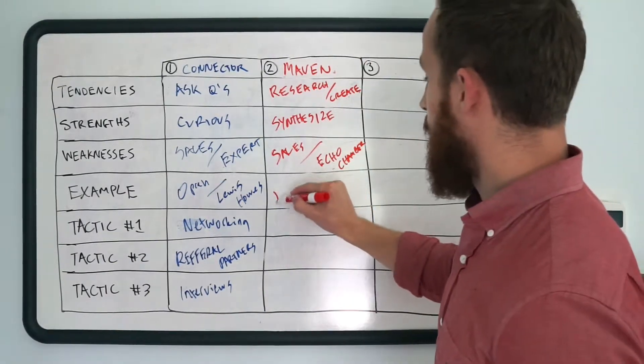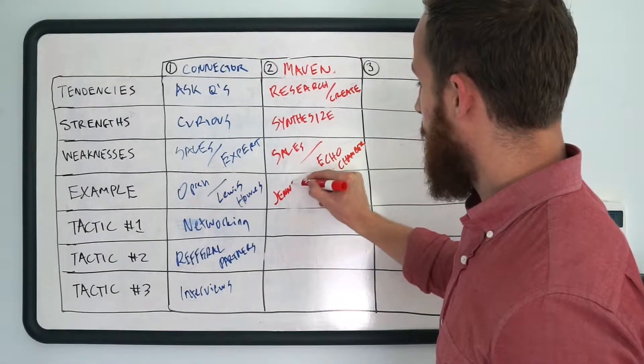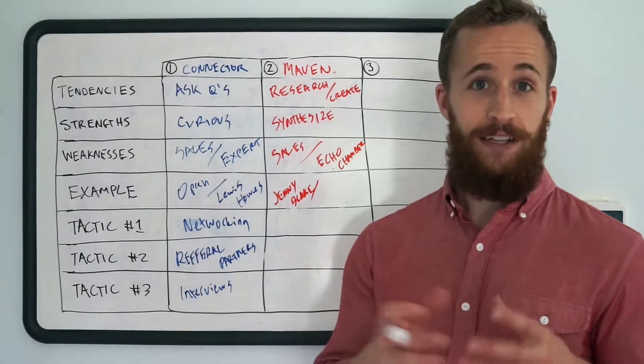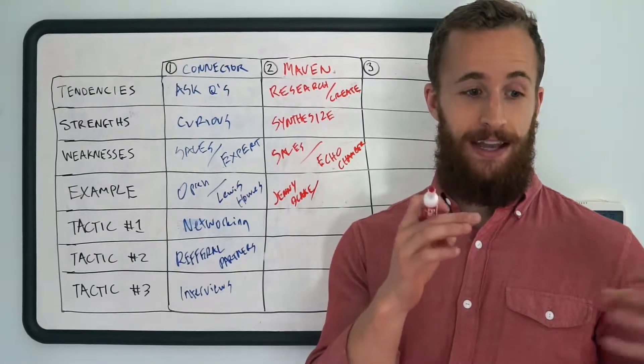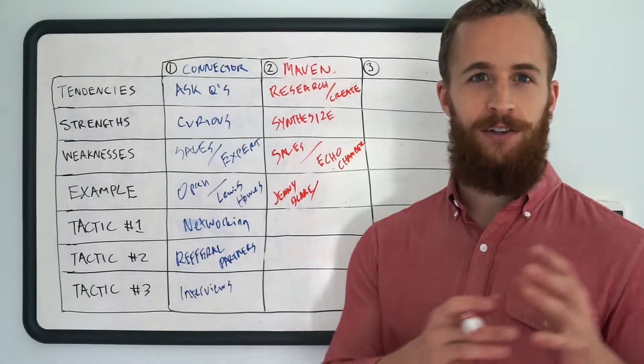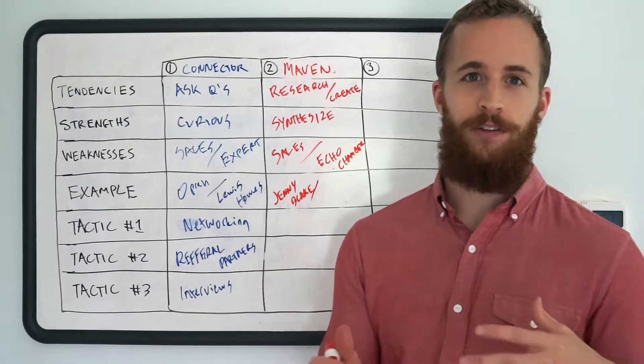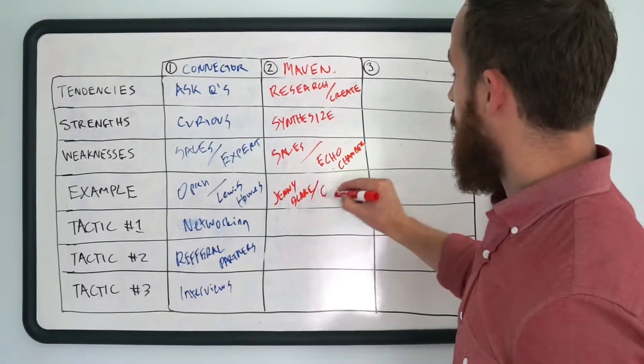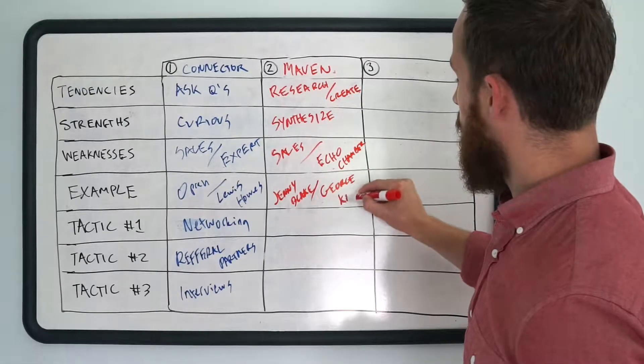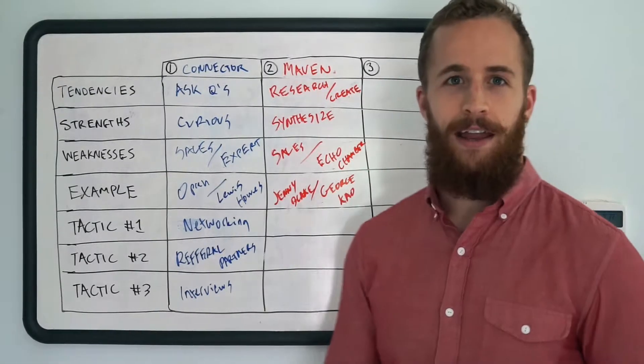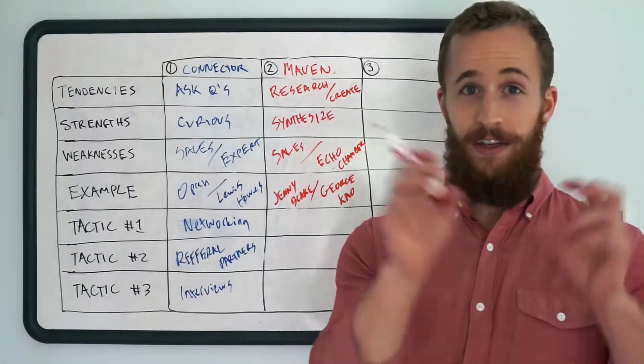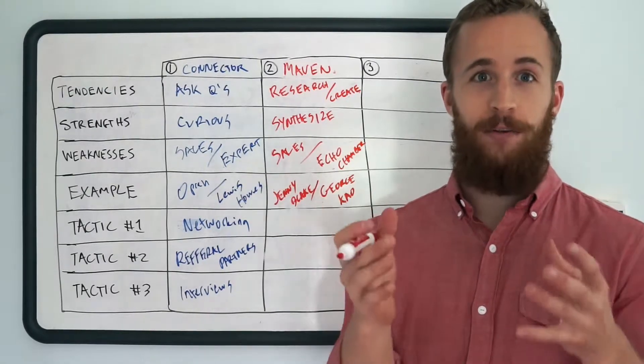An example of a maven, one would be Jenny Blake. She's a career and business strategist and she's gone really deep into the idea of a career pivot. Okay, and so she's an example of someone who I suspect is a maven just because she's a voracious reader, she's always recommending resources. Probably her primary type is a maven, the other is George Kao, and I suspect he's a maven just because he produces so much content and he's always on the forefront of kind of authentic marketing which is really a concept he's created himself.